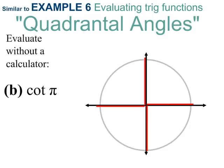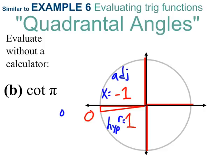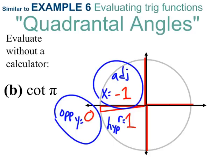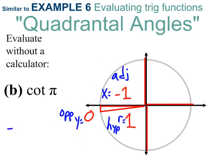One more: cotangent of π. That's over here. If I draw it slightly off, this is negative 1 for my adjacent, positive 1 and 0 for my hypotenuse and opposite respectively. Cotangent is the reciprocal of tangent, which is adjacent over opposite. We get negative 1 over 0. Rather than write negative 1 over 0, the answer you really want to put is just undefined.